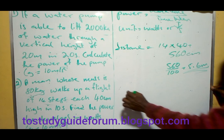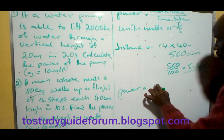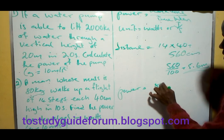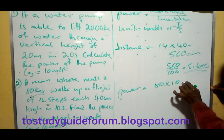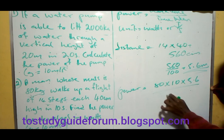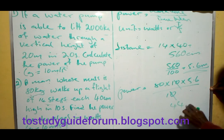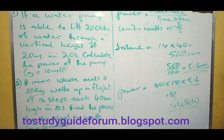Now we calculate the power: 80 times 10 (acceleration due to gravity) times 5.6 meters, all divided by 10 seconds. This gives us 448 watts. Thank you so much for being part of the class.